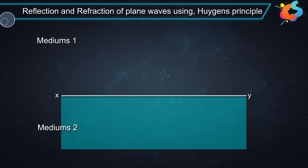the two media. Let V1 and V2 be the velocities of light in medium 1 and medium 2 respectively.